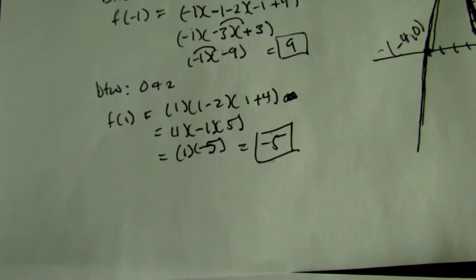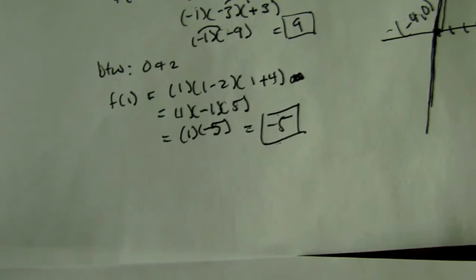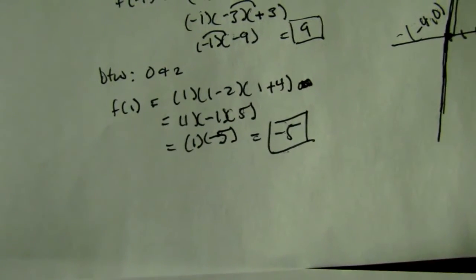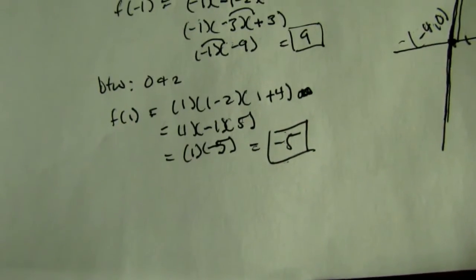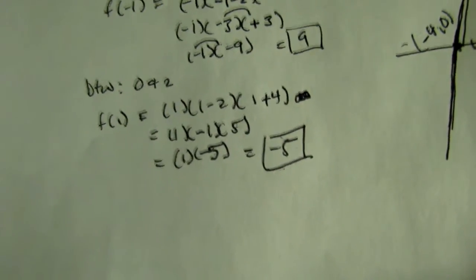I'm getting kind of shaky there, sorry. And, so, we get 1 times negative 5, and between 0 and 2 is a negative 5.